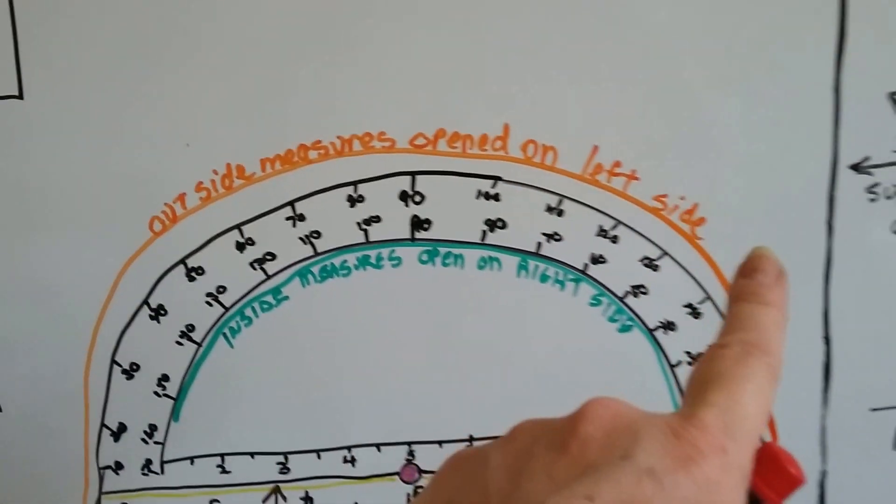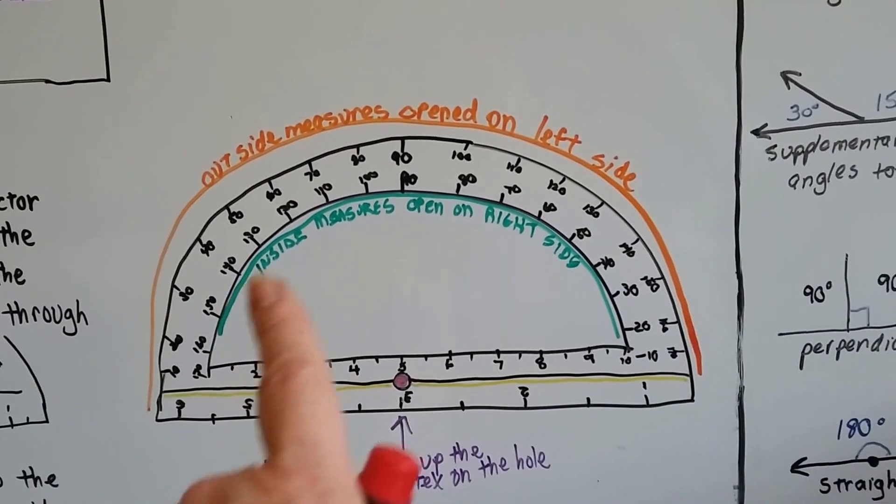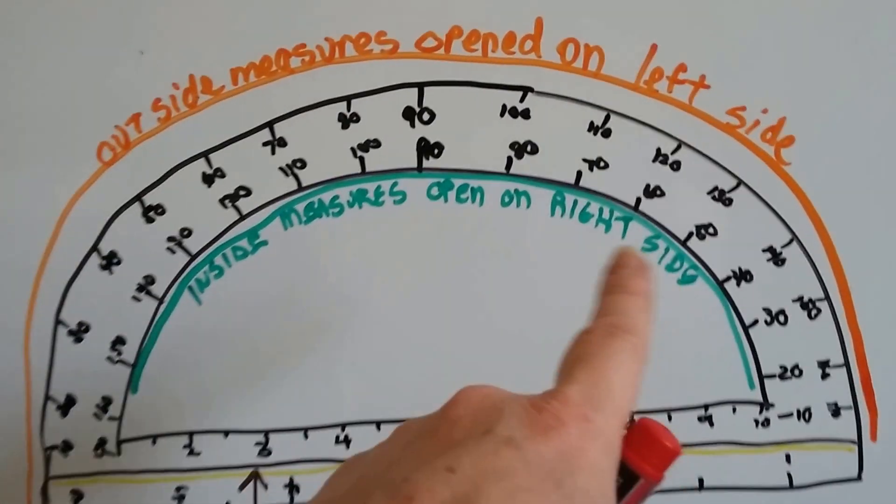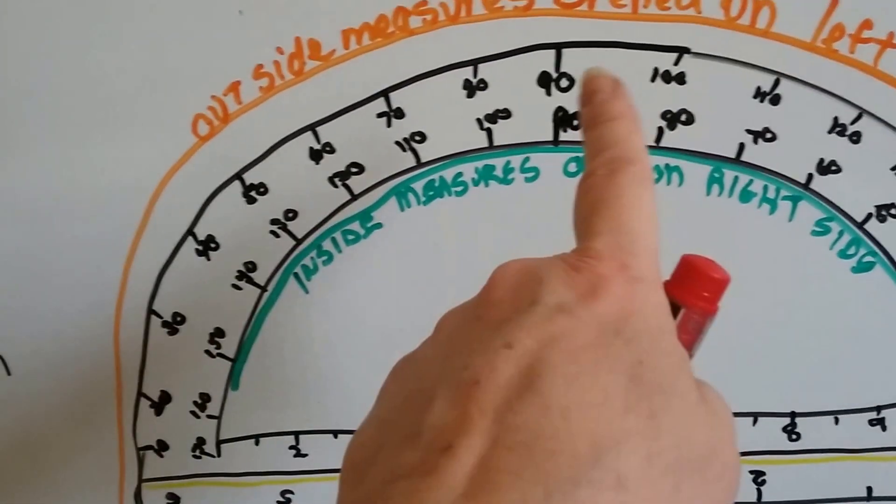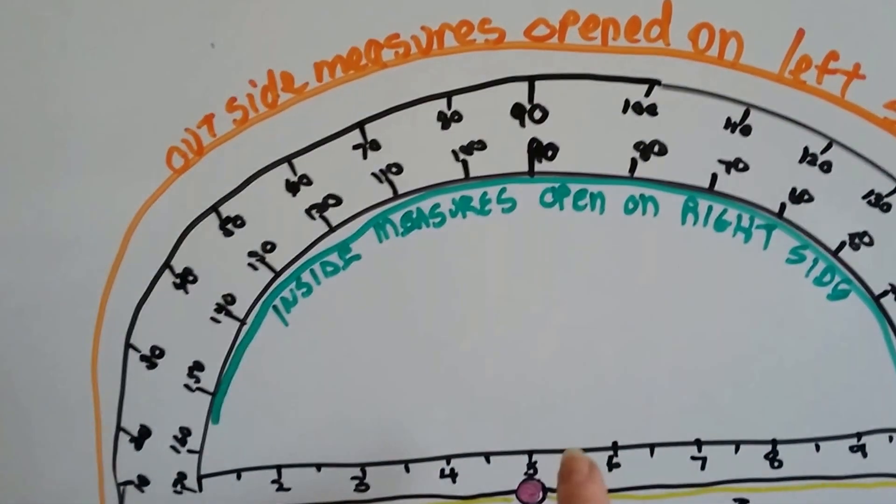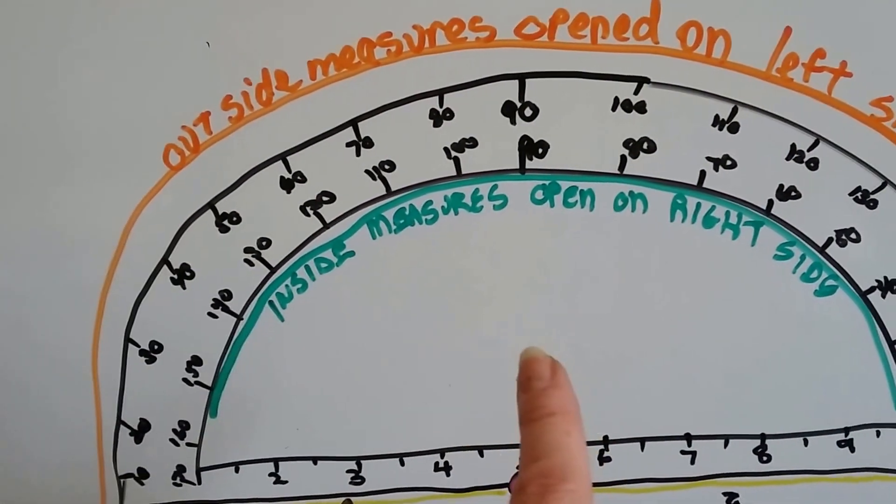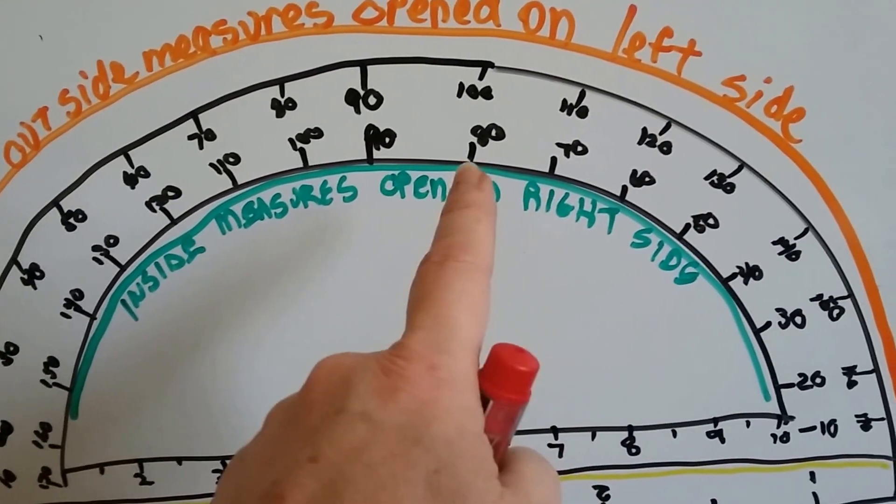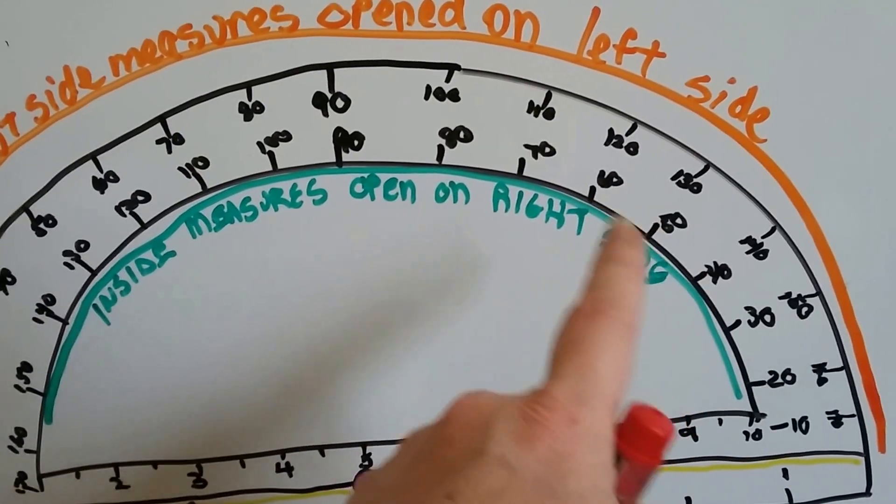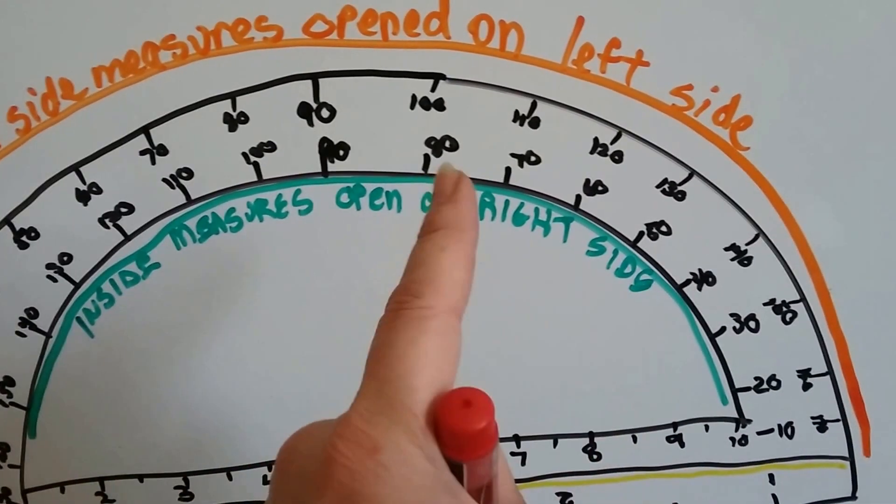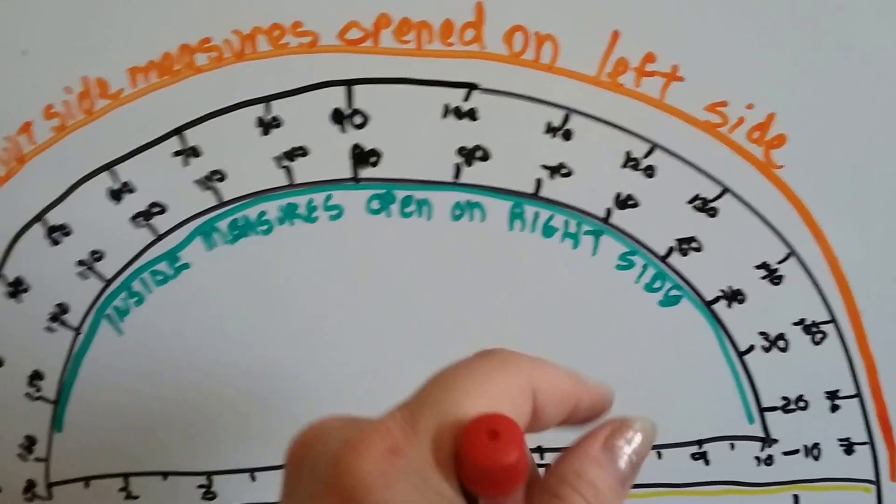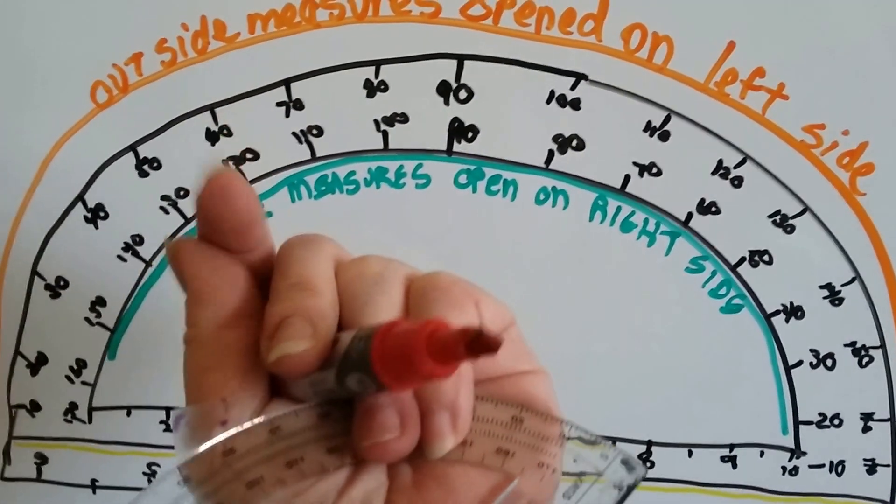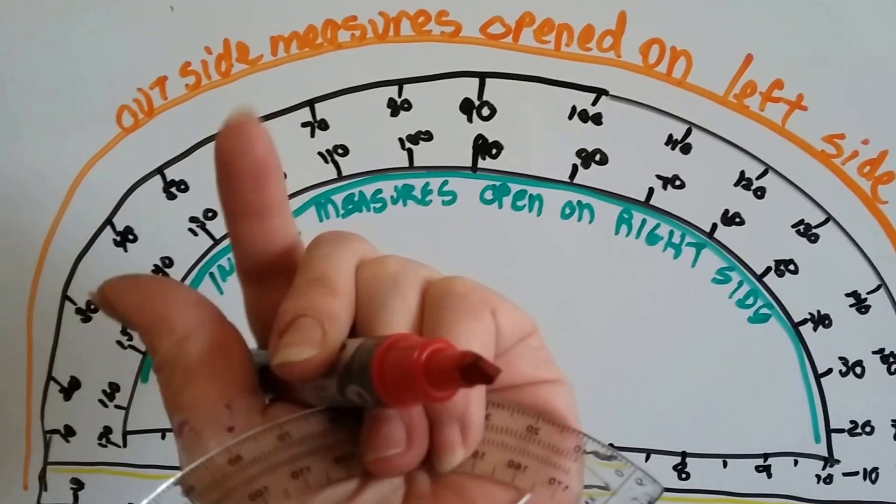So the outside is used to measure if it's opened on the left side, and the inside is used to measure on the right side, and it makes sense. Okay? Here's the 90 degrees, right? Straight up and down. If it's an acute angle, it's smaller than 90 degrees. So look at where the smaller numbers are, 80, 70, 60. These are on the inside here. So that's obviously going to be a right side open. And the smaller numbers here are on the outside. So that's obviously going to be an acute angle open to the left. See?